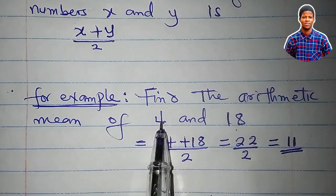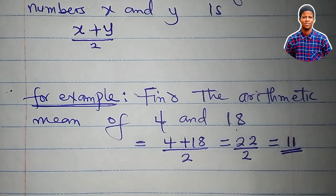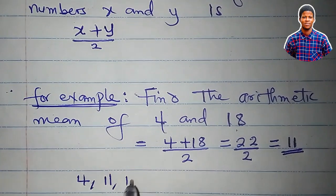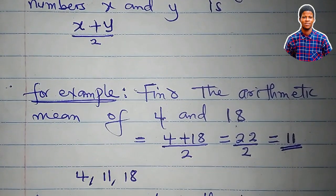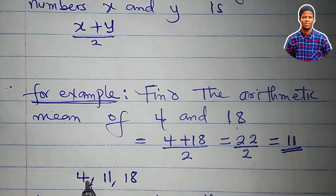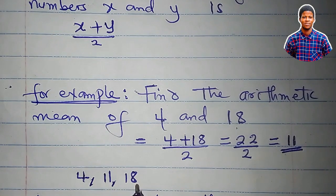In between 4 and 18, there is a number, which is 11. So we can write a sequence as 4, 11, 18. It's a sequence because it has a common difference. Let's check: 11 minus 4 is 7, 18 minus 11 is also 7. So this is a linear sequence.